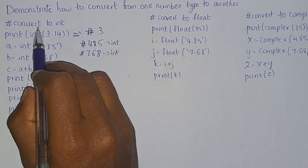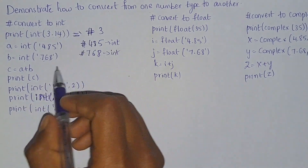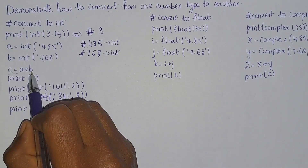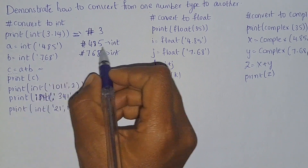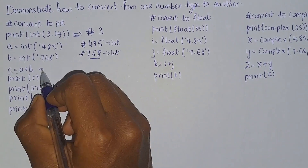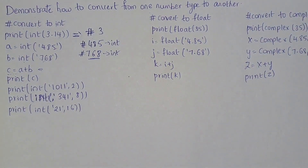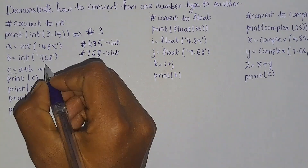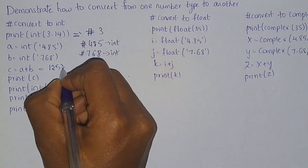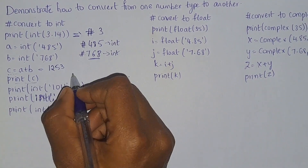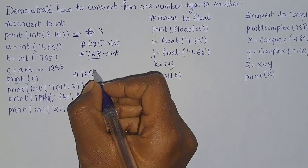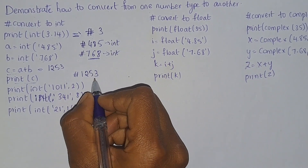The main thing here is to convert it into integer type. If you take c equals a plus b, you will get the addition of a and b as the result in variable c, that is 1253. So when you print c, your output will be 1253.